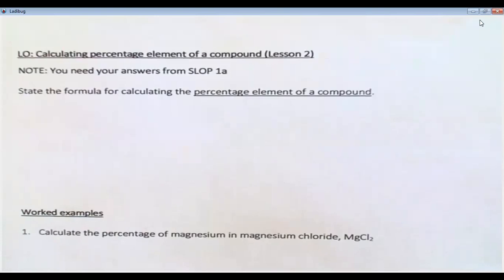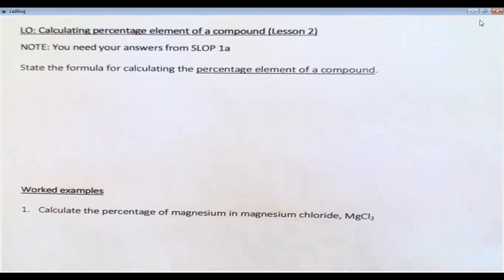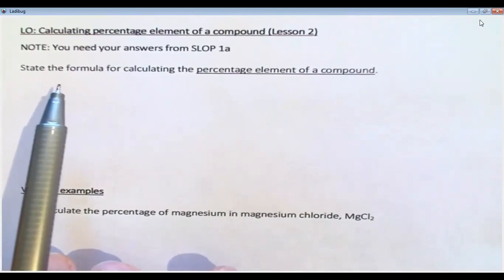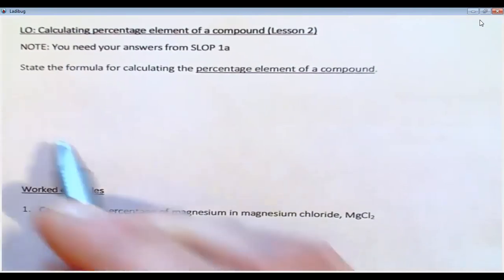Okay, so we're going to calculate some percentage element of a compound. We're going to start on this document. Lined paper is perfectly all right if you want to carry on lined paper. So the first question there, which isn't numbered, says state the formula for calculating the percentage element of a compound, and we're going to write this down.